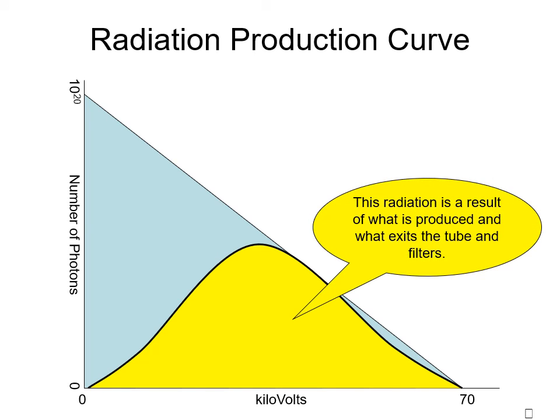The yellow portion of the curve is a result of the likelihood of Bremsstrahlung interactions, combined with the likelihood of low energy radiation interacting with tube filtration. The remaining blue portion of the curve is shaped by the filtration.